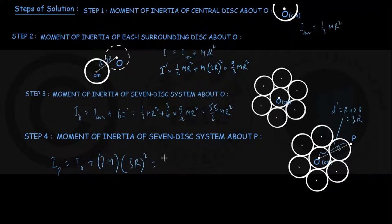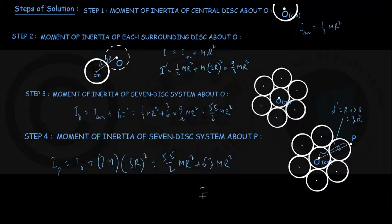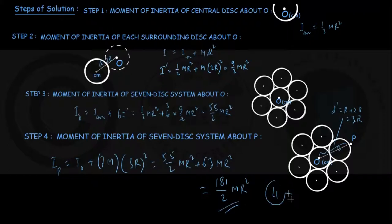So d = 3r, giving I_P = (55/2)mR² + 7m(3r)² = (55/2)mR² + 63mR² = (181/2)mR². This confirms that the correct answer is option 4.